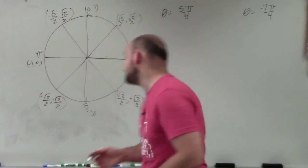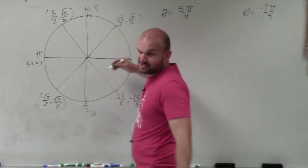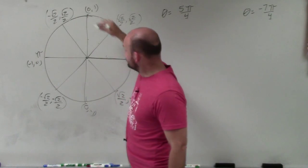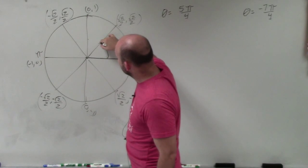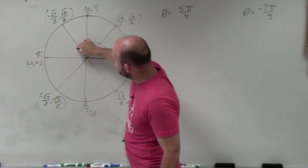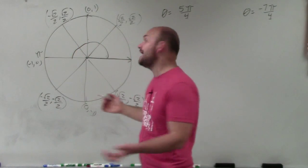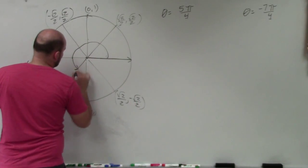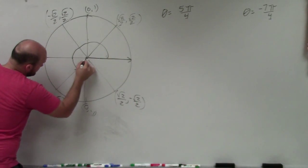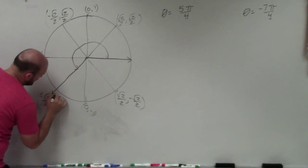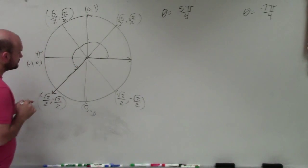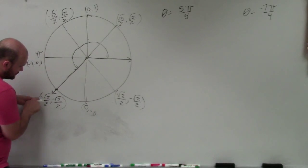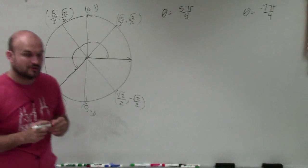So to find our angle, starting from the initial side, going in the positive direction: pi over 4, 2 pi over 4, 3 pi over 4, 4 pi over 4 which is pi. But we need to get to 5 pi over 4, so we go one more. Therefore, the terminal side of our angle lands right here, intersecting at the point negative square root of 2 over 2, negative square root of 2 over 2.